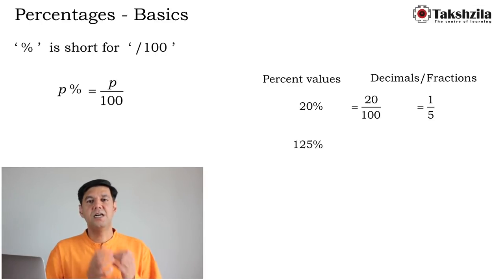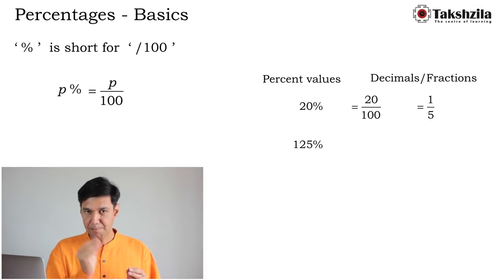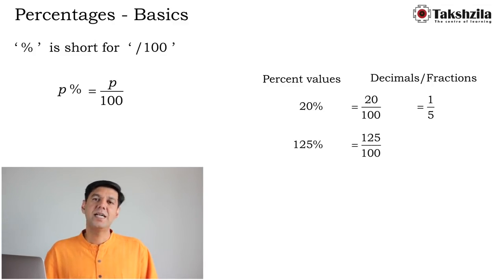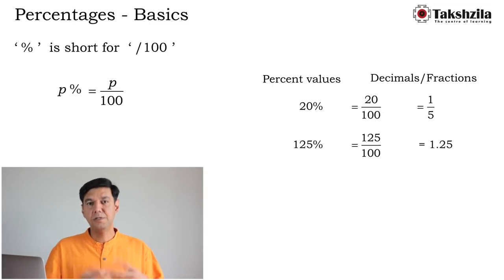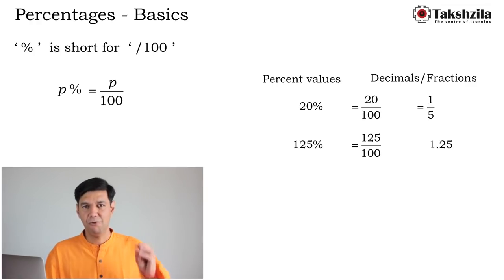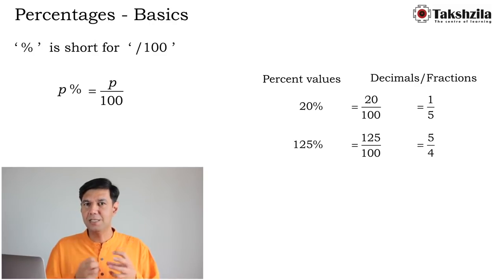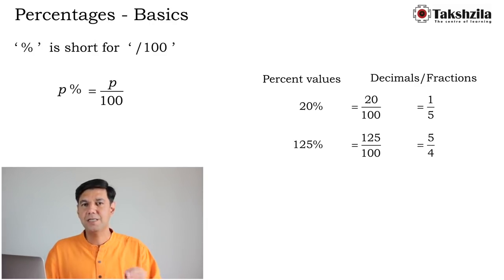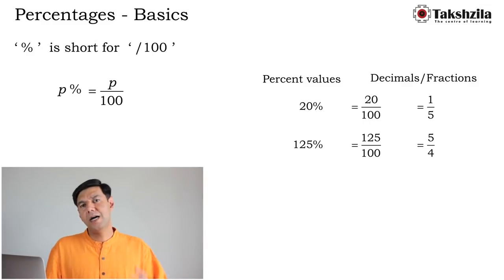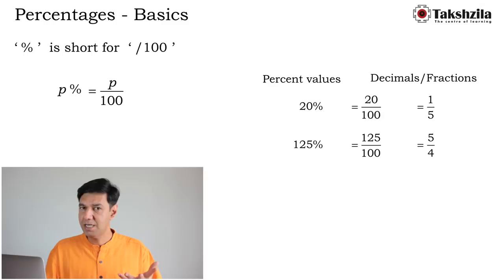125% means 125 divided by 100. In decimal form that is 1.25. The fraction form is more useful: reducing 125/100 by cancelling 25 gives us 5/4. So 125% = 5/4. Keep tracking these fraction-percentage equivalents as we go.